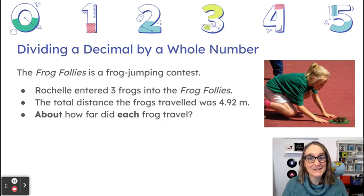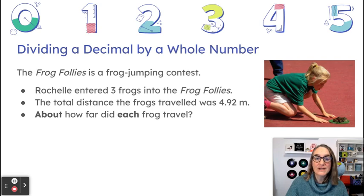About tells me that I may not need to find an exact answer, but I'm looking for something close to the exact answer. And each tells me that I'm probably going to need to use division. I mean, this is a lesson on division, but apart from that, each is a clue word for dividing things into equal groups, and that's what division is. So when I see each, I'm already thinking I have to divide things into equal groups. In this case, I'll be dividing the total distance the frogs traveled by the number of frogs, three.